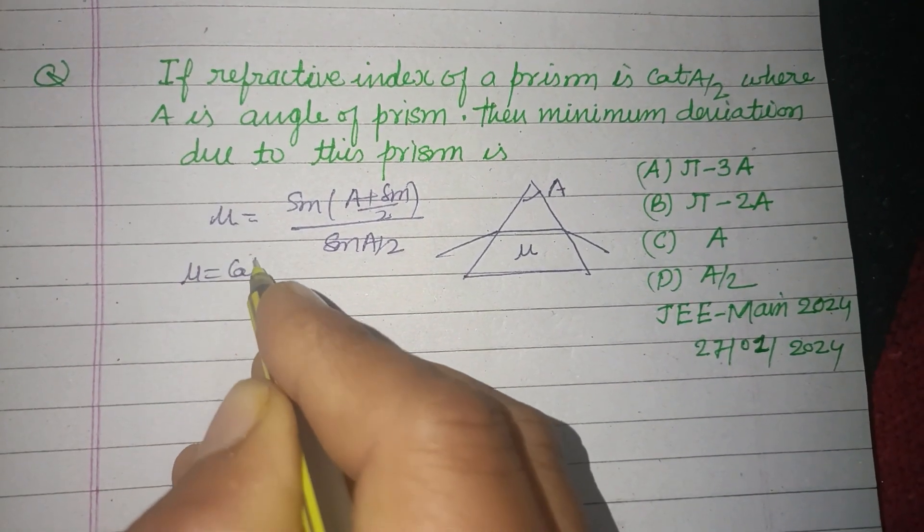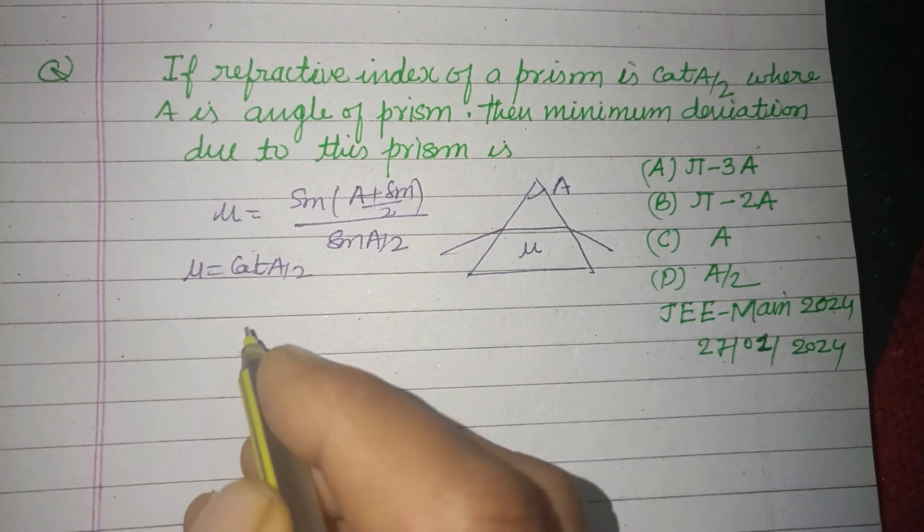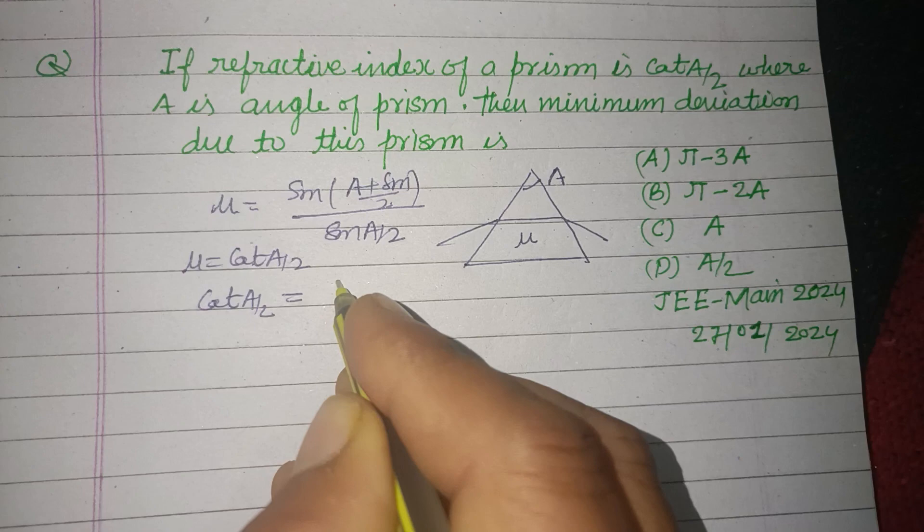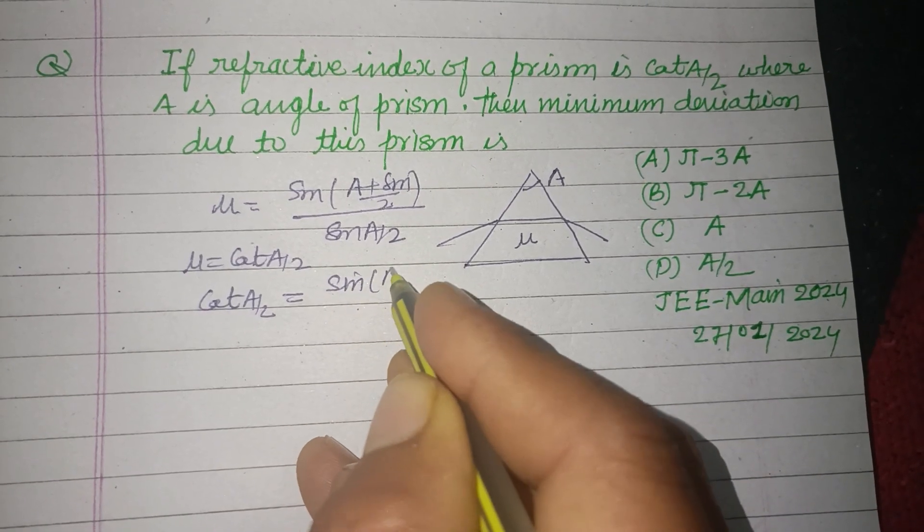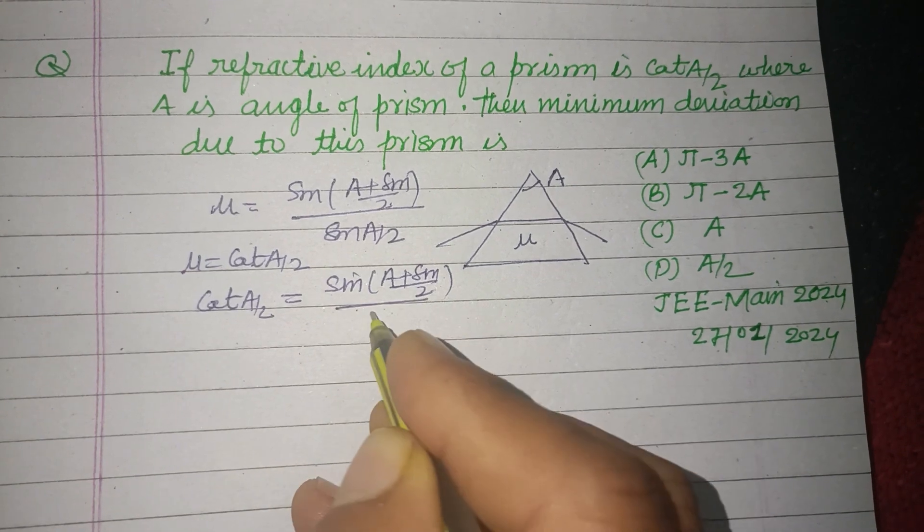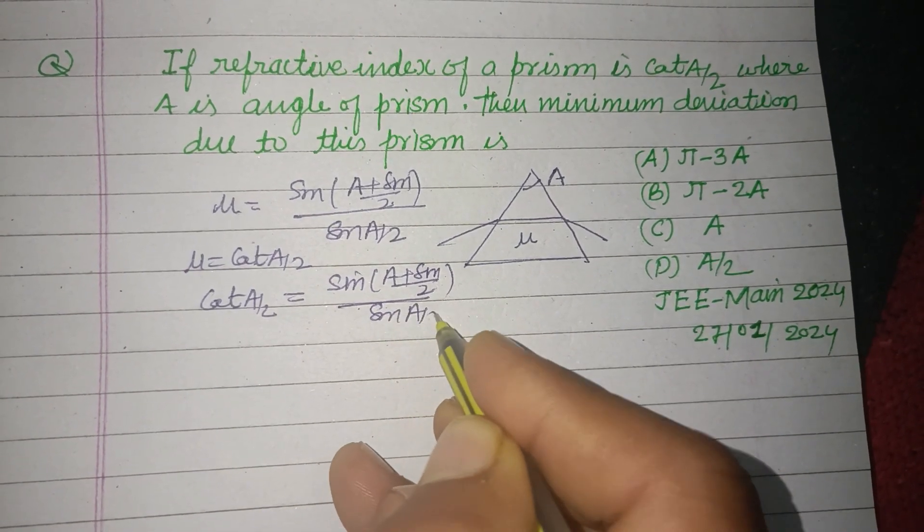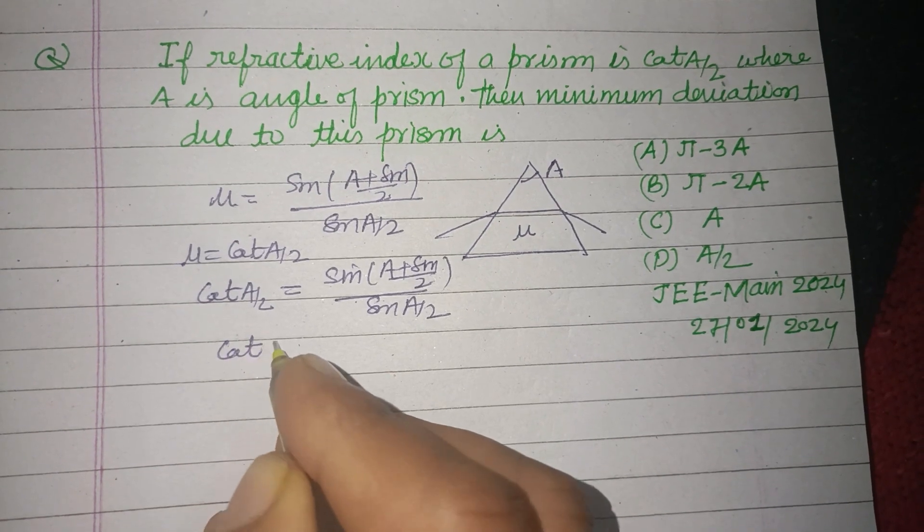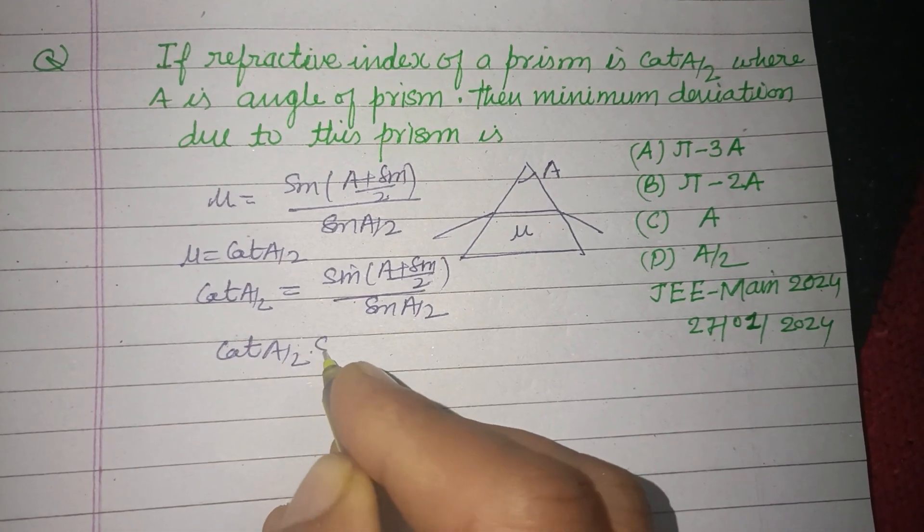Given to us as cot(A/2). So putting the value: cot(A/2) equals sin(A plus δm by 2) upon sin(A/2). On cross multiplication we get cot(A/2) times sin(A/2) equals sin(A plus δm by 2).